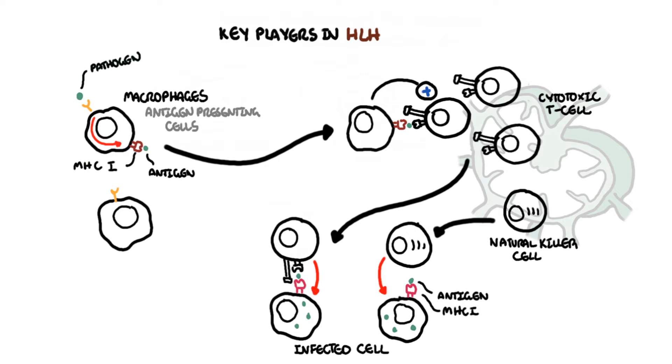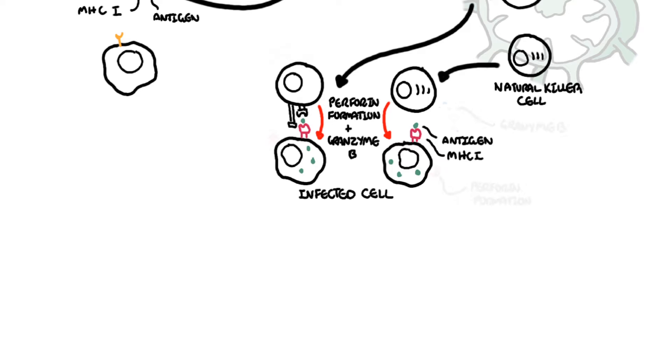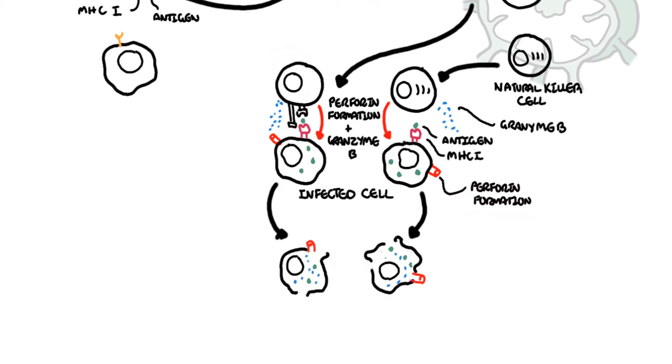When they find them, they kill the infected cells by forming a perforin channel and releasing granzymes or proteases into the cell. The infected cells will die after receiving the proteases.